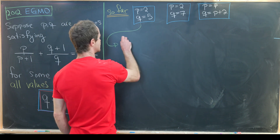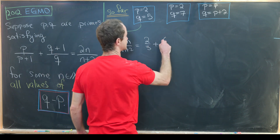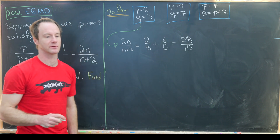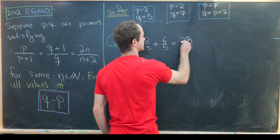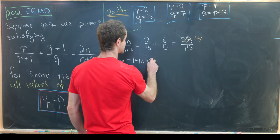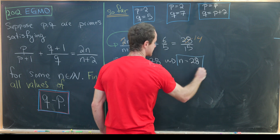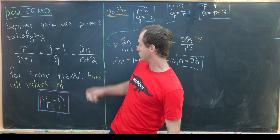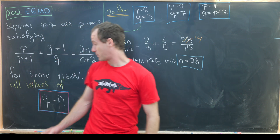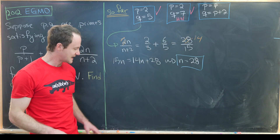For p=2, q=5: the equation becomes 2n/(n+2) = 2/3 + 6/5 = 28/15. Cross-multiplying gives 15n = 14(n+2) = 14n + 28, so n = 28. Since n=28 is a natural number, q − p = 3 is indeed a valid value. Similarly, p=2, q=7 also works — you can verify that.